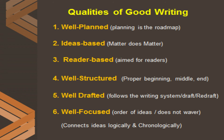Number four: well structured — proper beginning, middle, and end. Every text has a specific structure. Every writing needs to follow a structure: a proper introduction, a well-explained body with detail and supporting sentences, and a conclusion with a result for the readers. If the structure is well done, the writing is good. Number five: well drafted — follows the writing process of draft and redraft. The writer first writes the first draft, then rewrites and redrafts it. If the writing is well drafted, it is a good writing.